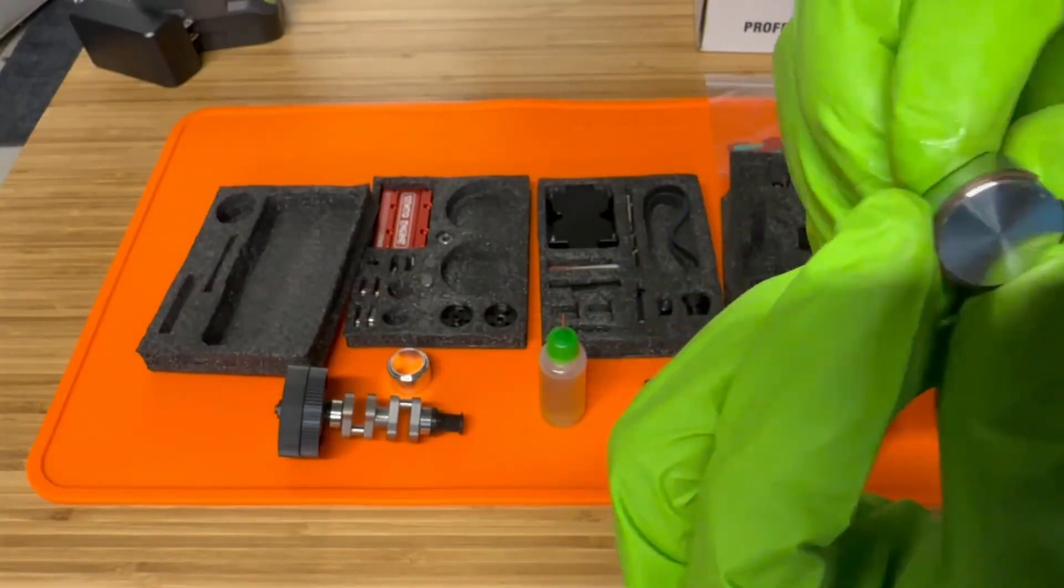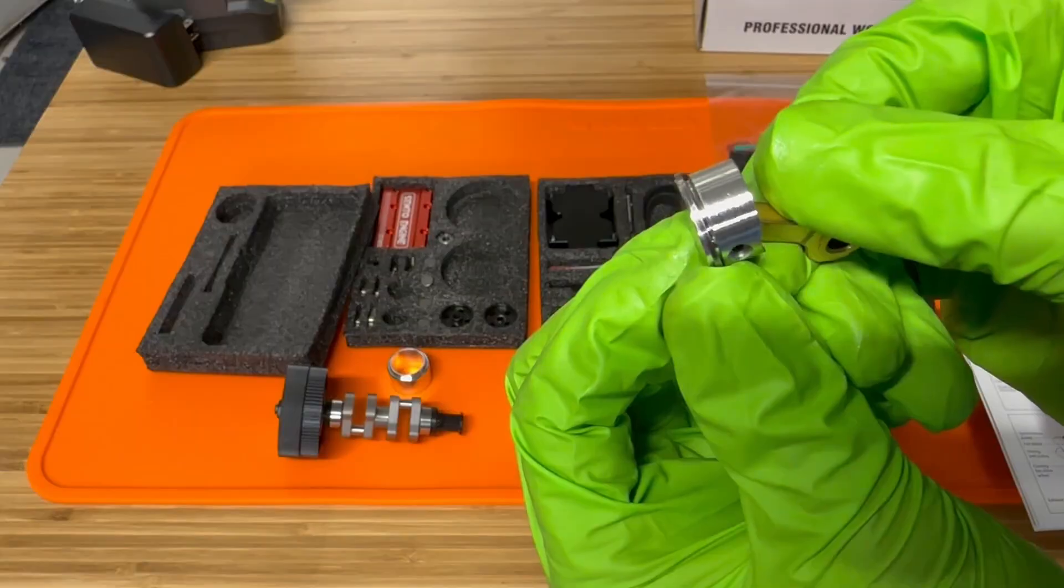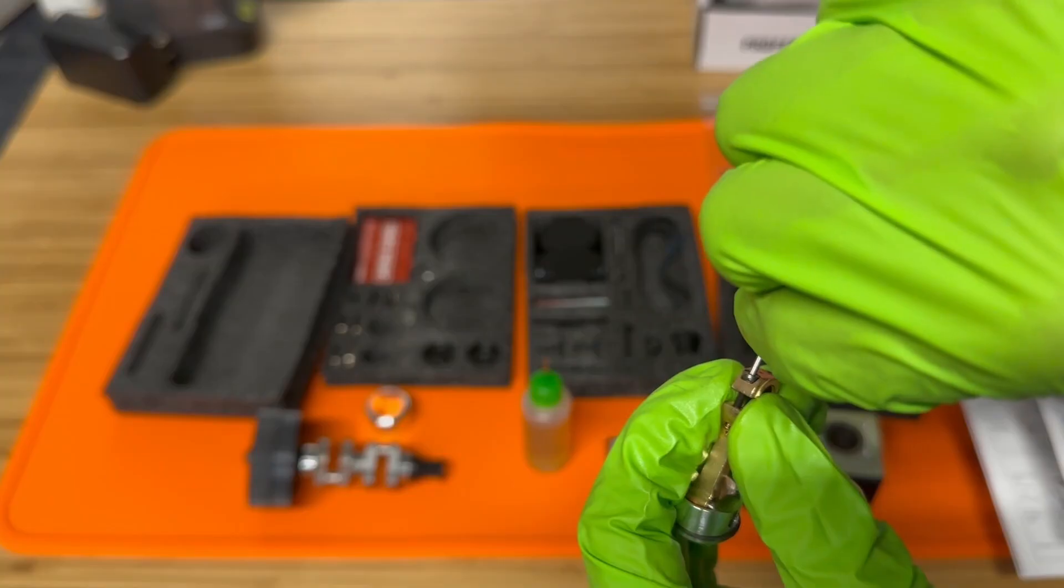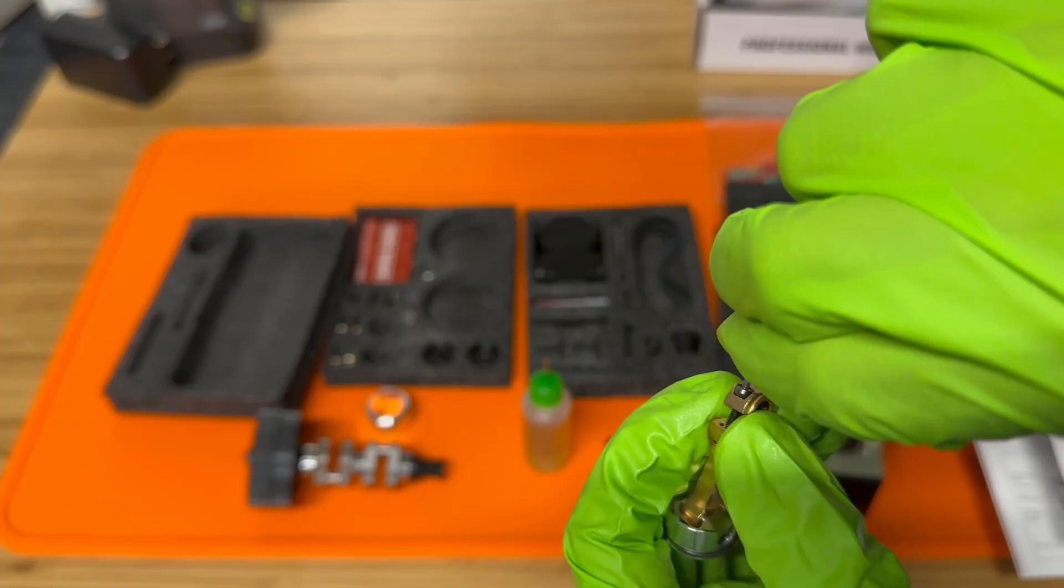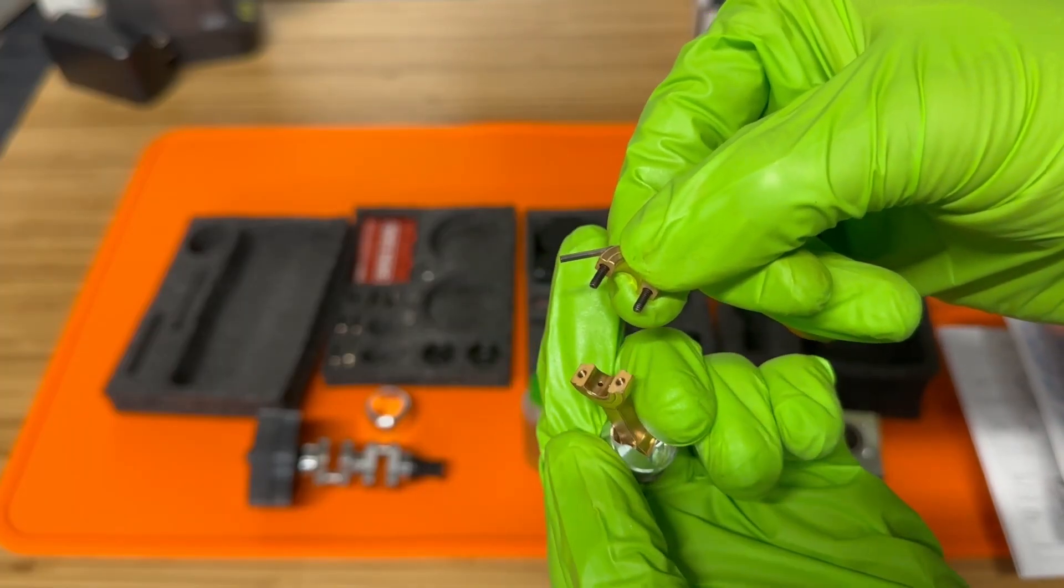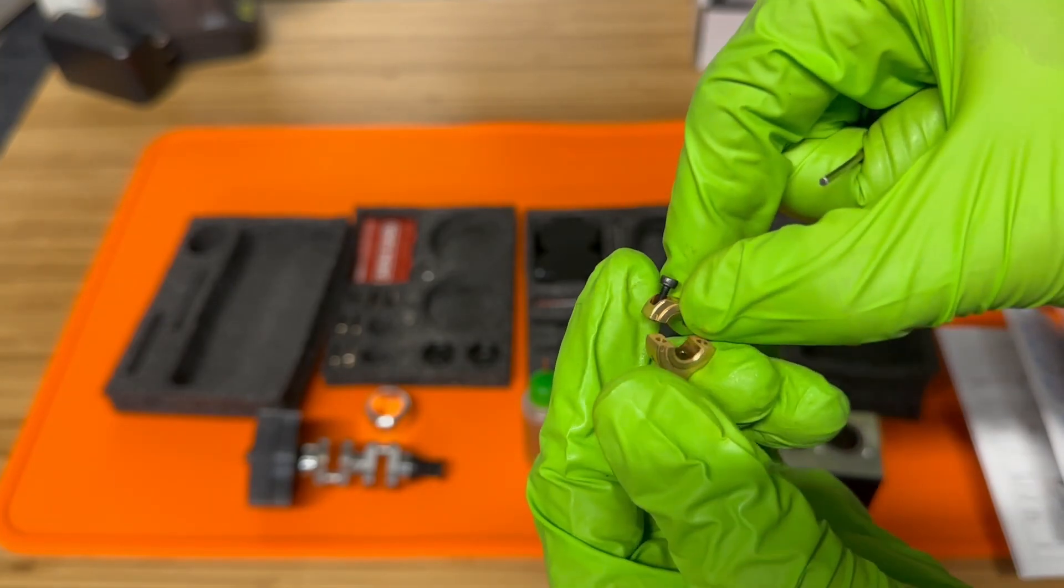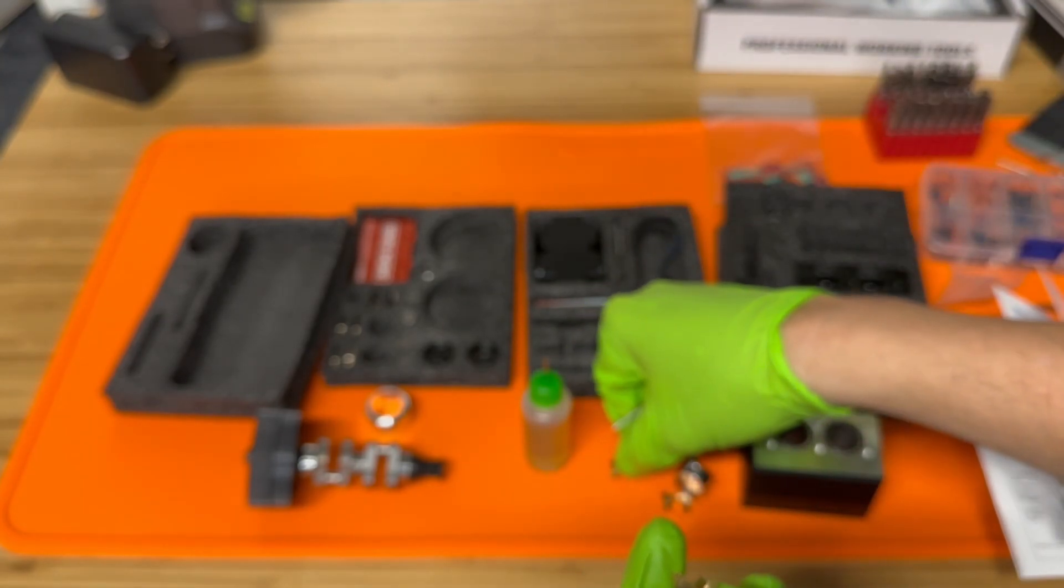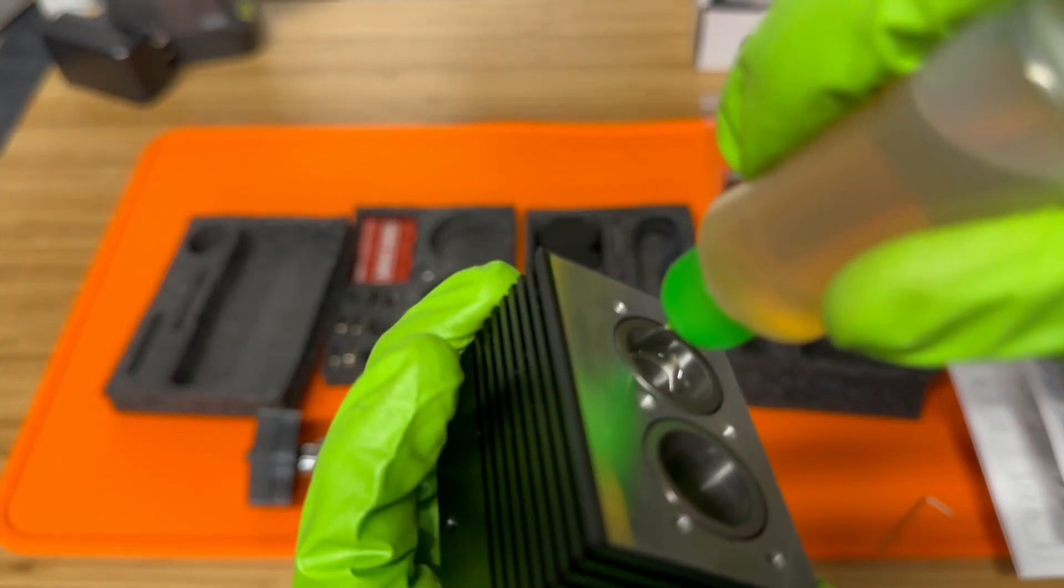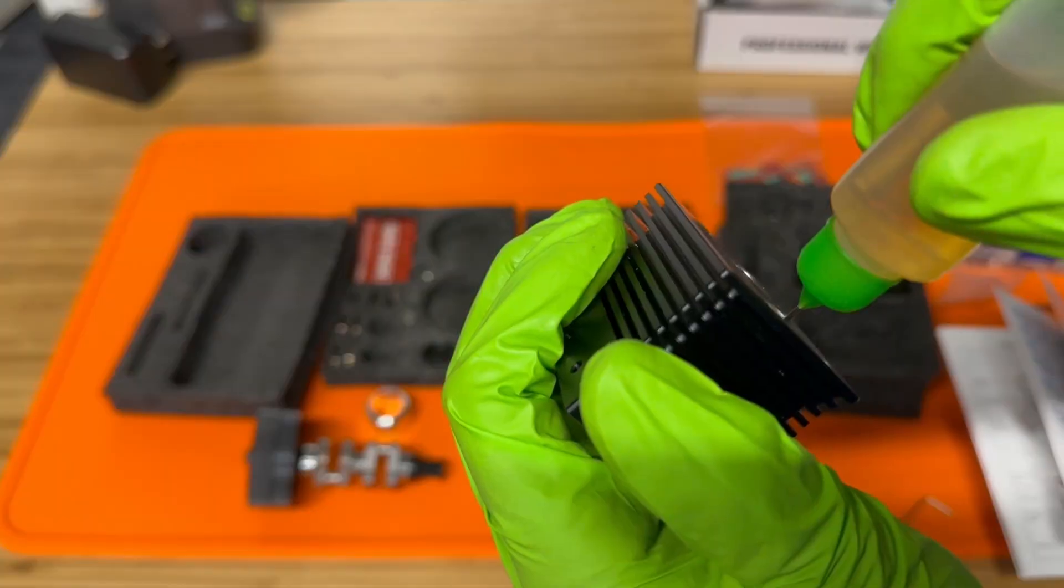And now that we're done with this we're going to insert the pistons into the sleeves. But before we insert the piston we're going to actually have to remove the rod cap on the bottom of both of them. So you're going to remove all four screws for both pistons. You'll notice that there is no bearing inserts for these. So they're just I believe made out of brass. And next we're just going to lubricate the piston sleeves on both of them. Be generous with this because it'll just make it a lot easier to insert.